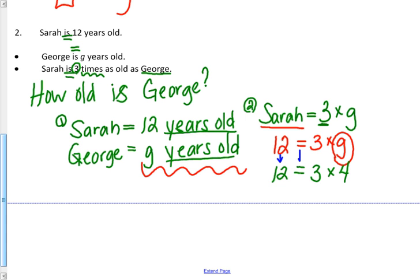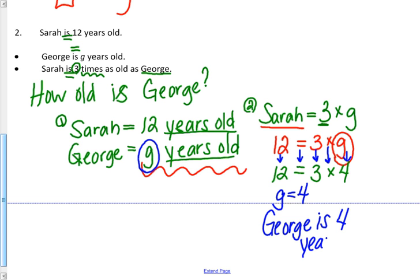And you can see everything lines up. 12, 12, equal, equal, three, three, times, times. So the G must equal four. So that means the G we know stood for George's age. So George is four years old.